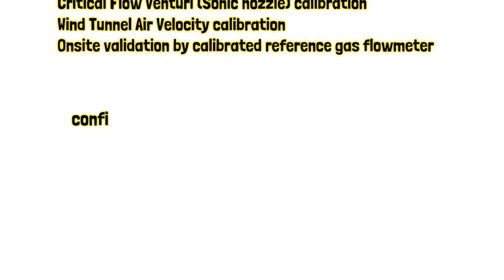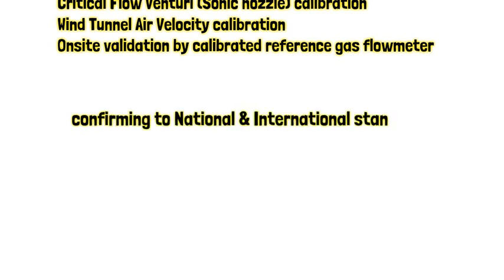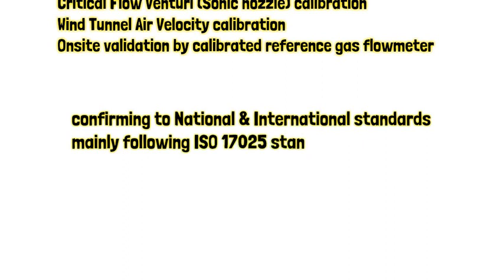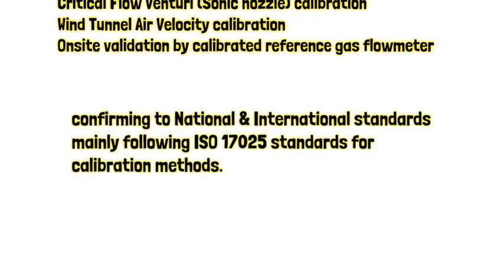Gas flow meter calibration is done as per the above various calibration systems, which involve comparison and adjustment of the flow meter under test, conforming to national and international standards, mainly following ISO 17025 standards for calibration methods.